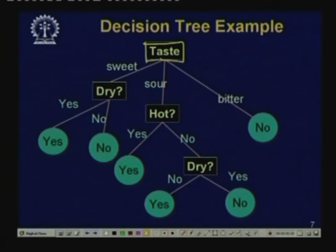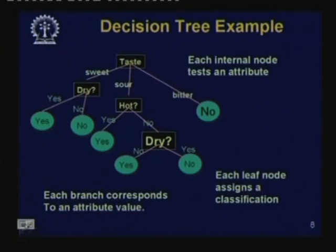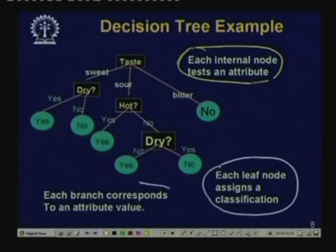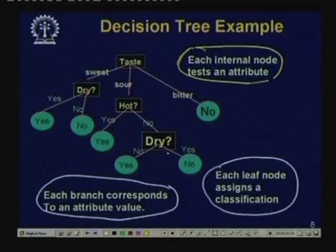Note that the depth of the different leaves varies. For example, if the taste is bitter, the food is not liked irrespective of other attributes. Each internal node in the decision tree tests an attribute, each leaf node assigns a classification, and each branch corresponds to an attribute value. There are four internal nodes — taste, dry, hot, and dry — each testing one attribute, and each leaf assigns a classification of liked or not liked.